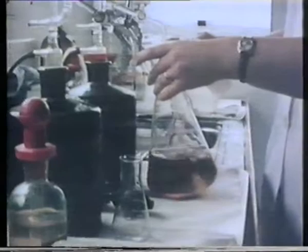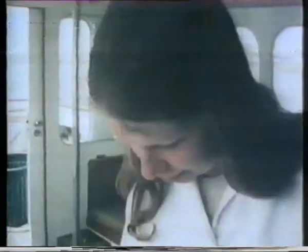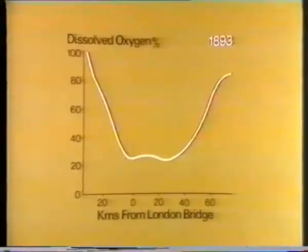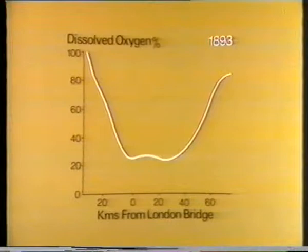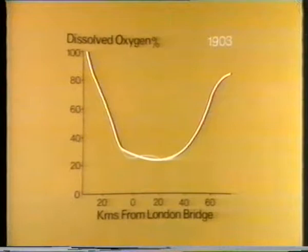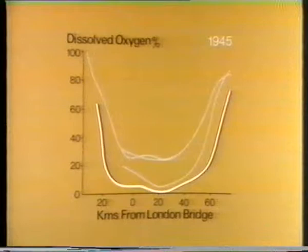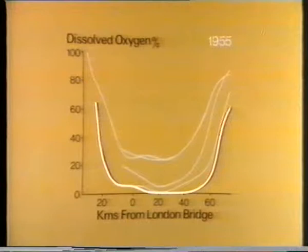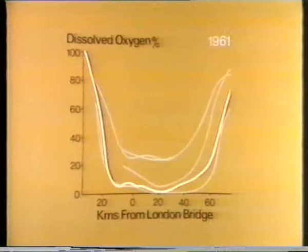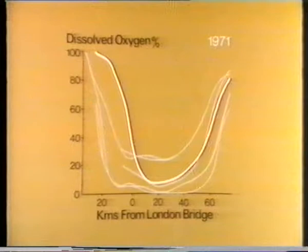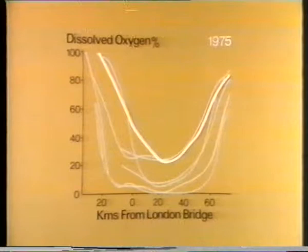The Thames Water Authority is now responsible for checking the oxygen concentration in the river. Measurements are taken at various points and the results are compared from year to year. The earliest measurements were taken in the 19th century. Here's a plot of oxygen concentration against distance from London Bridge. As the years passed, conditions worsened — the worst part of the river was always about 20 kilometres downstream. The 1950s were a crisis period, with no oxygen and a dead river. A major factor in the recovery since then was the development of the mathematical model, and by 1975 the oxygen concentrations were on the way to recovery.